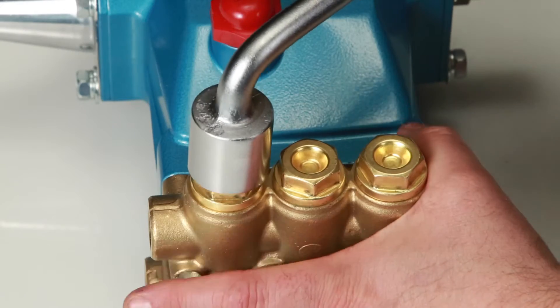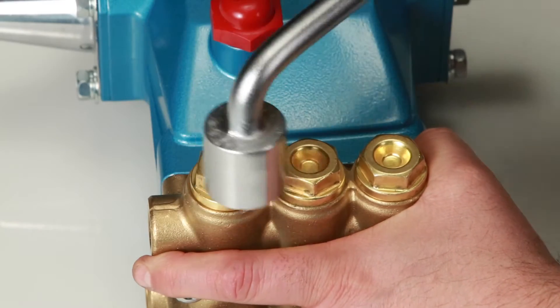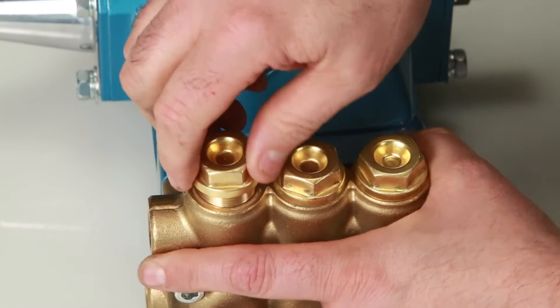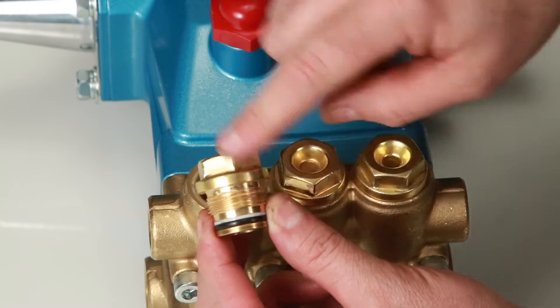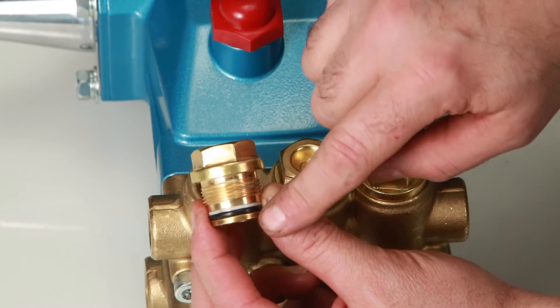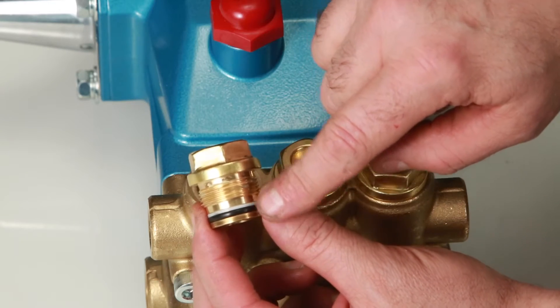To begin servicing the valves, remove the valve plugs using a 24mm hex wrench. After removing the valve plugs, be sure to inspect the O-ring and backup ring for any damage, or replace with new parts included in a valve kit.